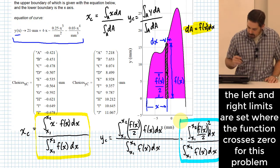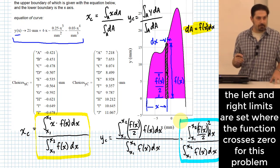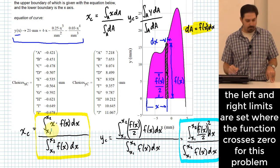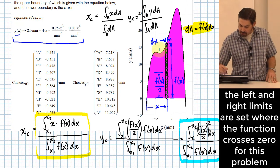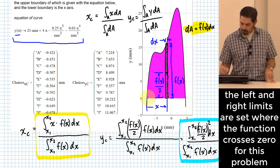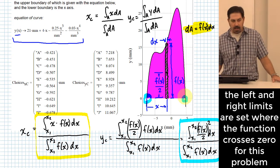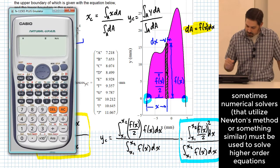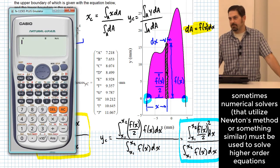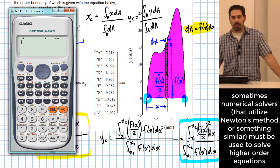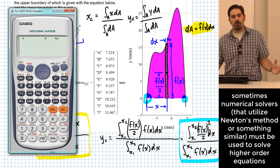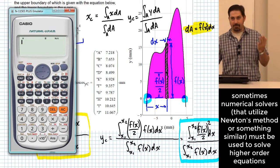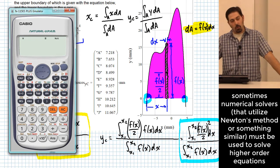Starting with X_c, I need to know what to plug in for X1 and X2 — meaning I need to solve for the zeros of this function. I've got one zero on the left and one on the right. Does this calculator solve fourth-power equations? It actually stops at third power. So if you have a third-order polynomial or less, you can use the built-in solver to get all roots, but for fourth power it can't give you all the roots.